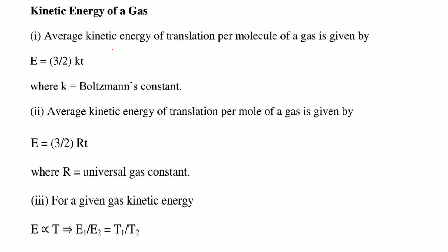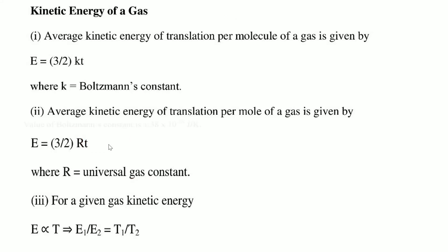The average kinetic energy of translation per molecule of a gas is given by E = (3/2)kT, where k is the Boltzmann constant and T is the temperature. The average kinetic energy of translation per mole becomes (3/2)RT, where R is the universal gas constant. For a given gas, kinetic energy is directly proportional to temperature: E₁/E₂ = T₁/T₂.